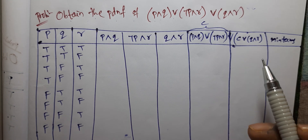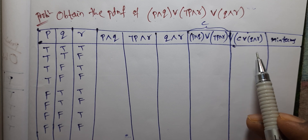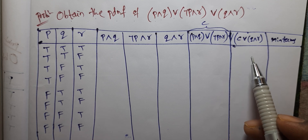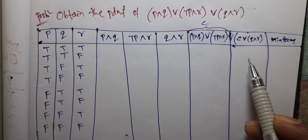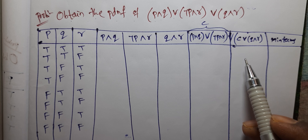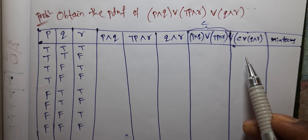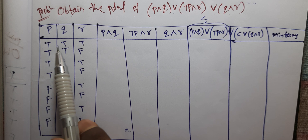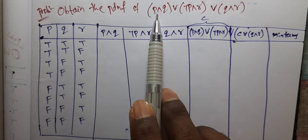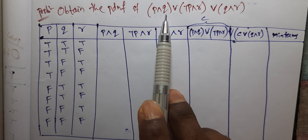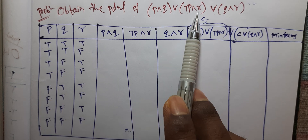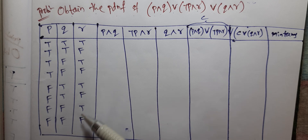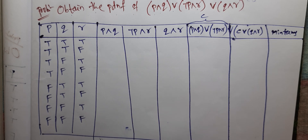See here. This PDNF truth table is the result of the last load. Here we have three propositions and eight statements.